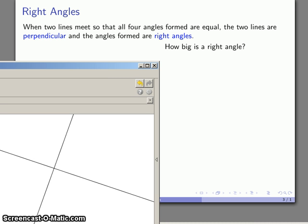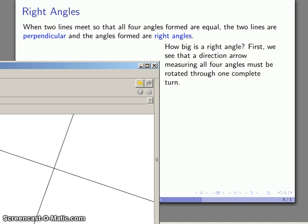So the natural question we want to ask is well how big is one of these right angles? Well let's consider what our rotations look like. The measure of an angle is going to be based on how much of a rotation a direction arrow will make. So let's go ahead and put that direction arrow down there.